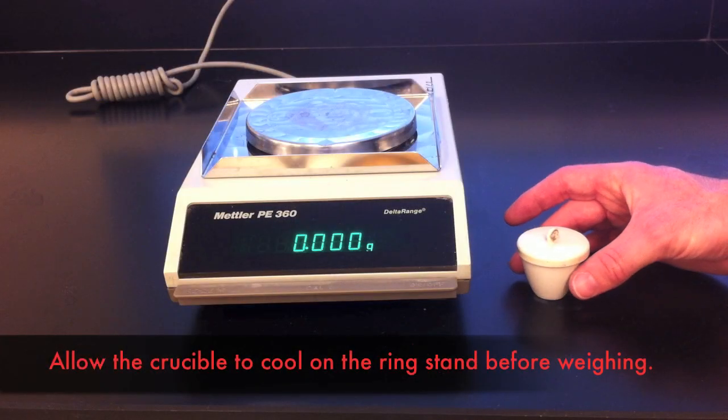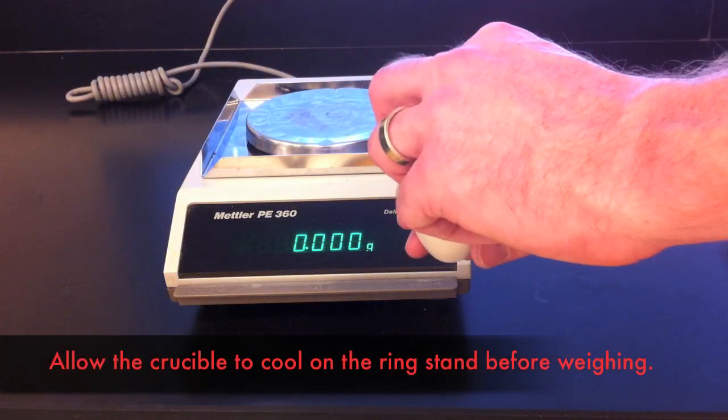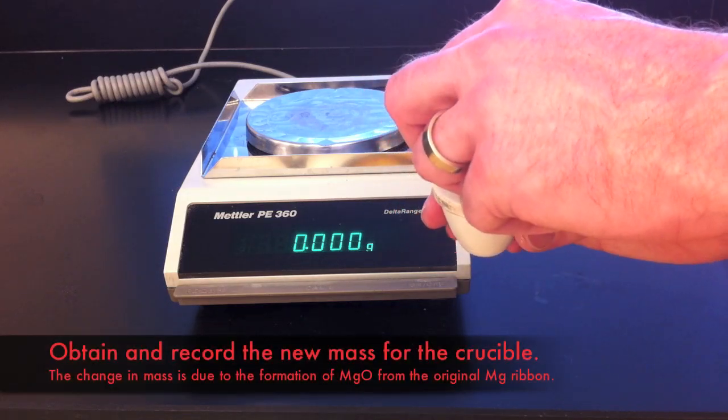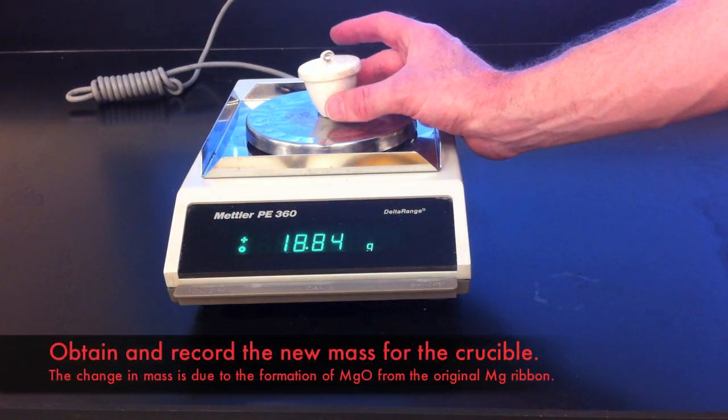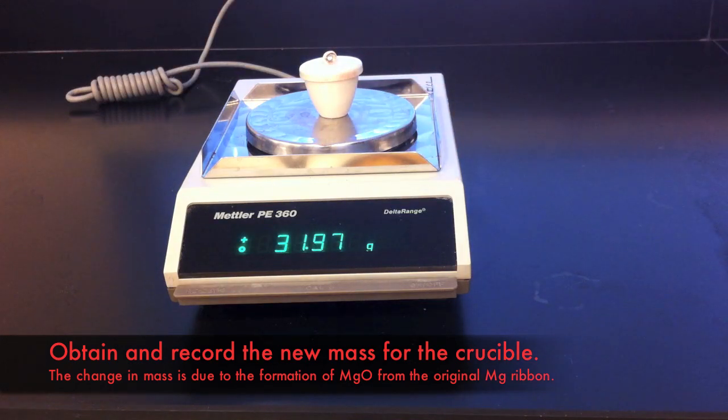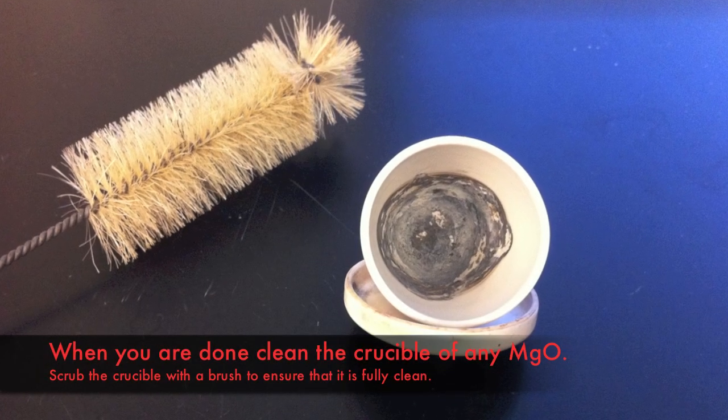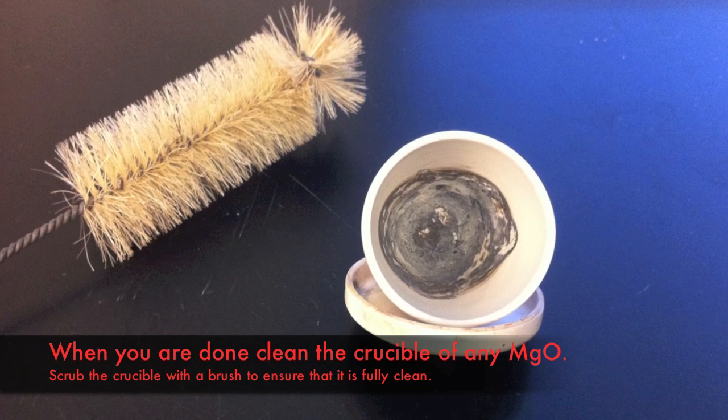After the drying process, allow the crucible to cool before weighing it. Make sure that it is cooled completely before you proceed with this step. Obtain and record the final mass of the crucible and the solids within it. Finally, clean and scrub the crucible to remove any of the solids to ensure that it is completely clean before returning it.